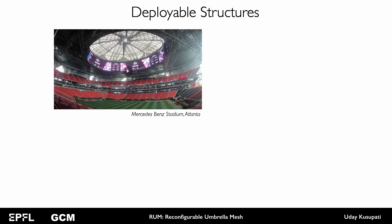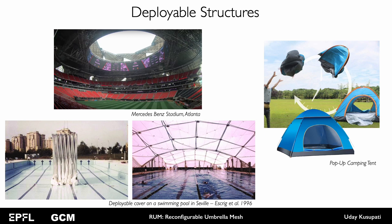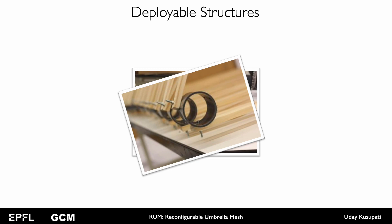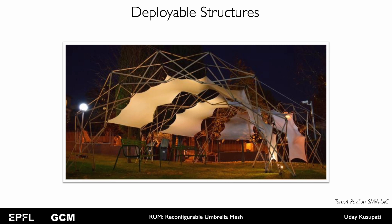A deployable structure that we are all familiar with at a large scale is the roof of a stadium. It deploys to open or close depending upon the weather. Here's a different scenario where a compact structure is transported and deployed to insulate a swimming pool depending upon the season. A more ubiquitous example is a pop-up camping tent that can be rapidly deployed when needed but takes little space when packed. Broadly, deployable structures employ various transformation mechanisms to morph their shape towards specific shape goals. Just using wooden bars and simple joints and an easy assembly process, the Torus 4 pavilion is an example of a lightweight structure that rises from the need for versatile modulated spaces for temporary events.